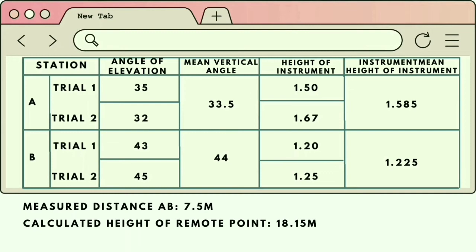The mean height of the instrument in Station A is 1.585 and 1.225 in Station B, as well as the distance AB which is 7.5 meters, and calculated height of the remote point which is 18.15 meters.